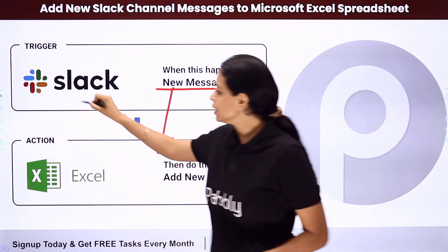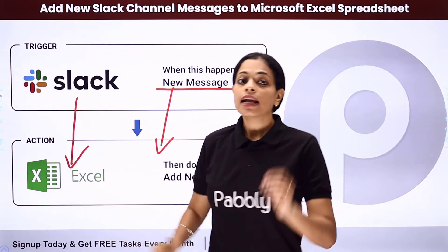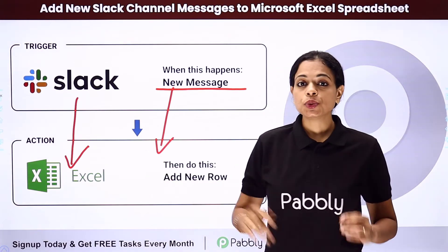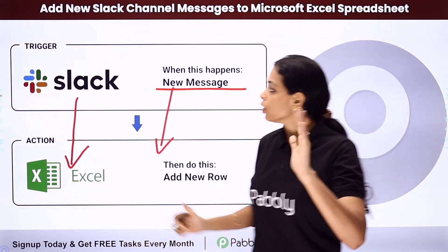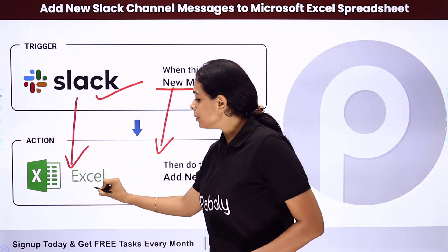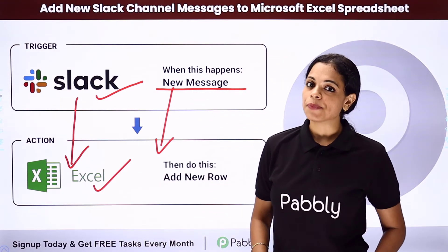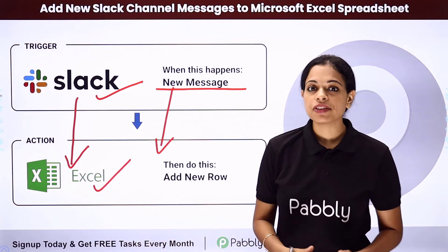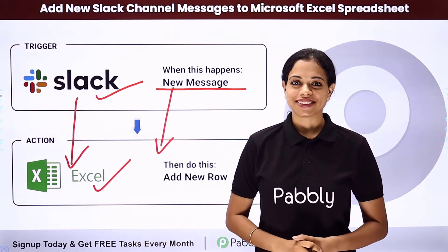For this, you will have to integrate these two applications. This can be done using Pabbly Connect software. Your trigger application would be Slack and your action application would be Microsoft Excel. To show you how to do this, let me take you to my screen.